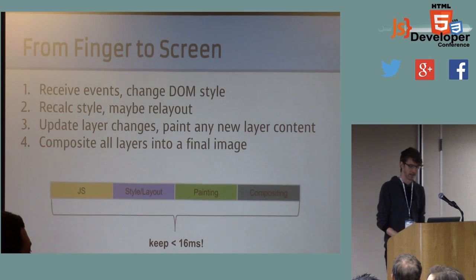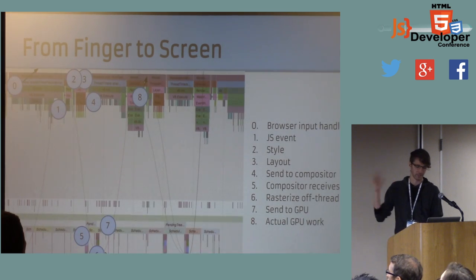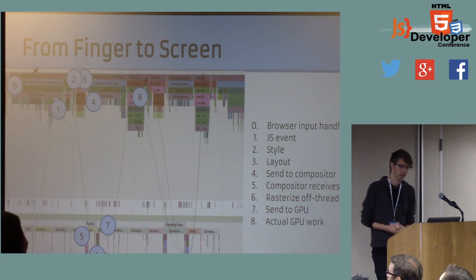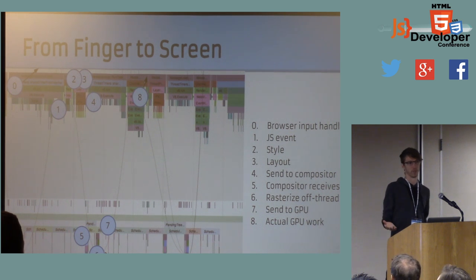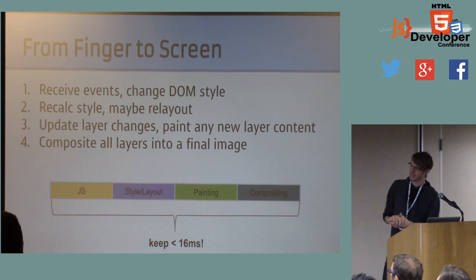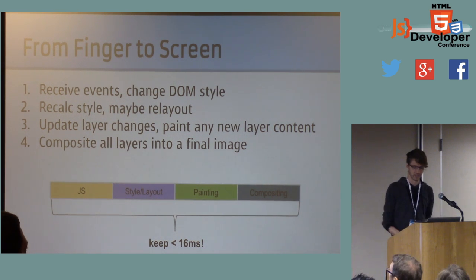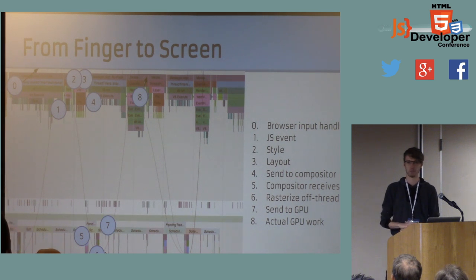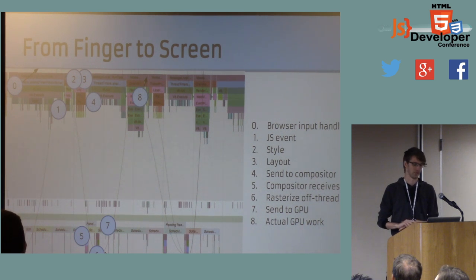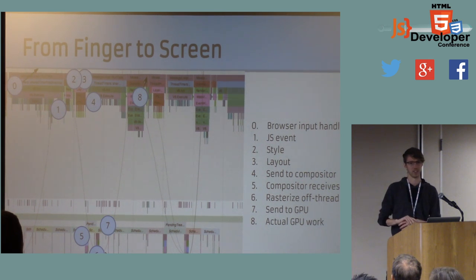This is grossly oversimplified. If you want your application to be responding to touch input within frame budget, not only does all this need to happen, but there's a bunch of stuff surrounding it that needs to happen too. The browser itself needs to receive the input from the operating system, decide what it's going to do with it — is it going to show the context menu, or determine you're doing some complicated gesture? Then it gets passed to JavaScript, which gets to take a crack at the touch event coming in.